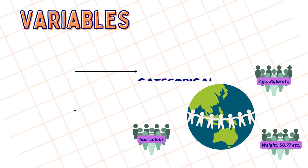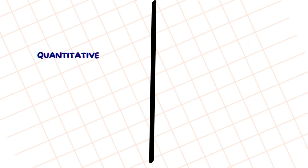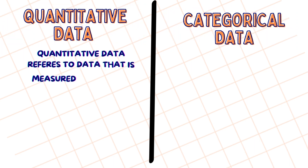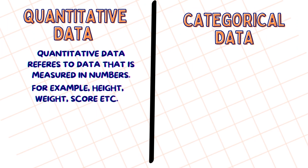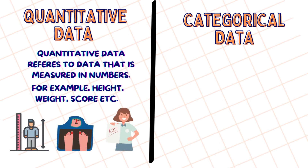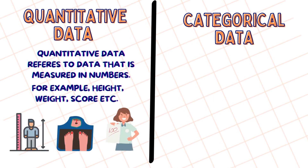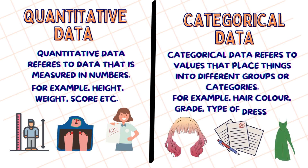A variable can be categorized in two different forms. One is categorical data, and the second one is quantitative data. Quantitative data refers to data that is measured in numbers — for example, height, weight, score, or marks. Categorical data refers to values that place things into categories or groups — for example, hair color, grade, types of dress, etc.